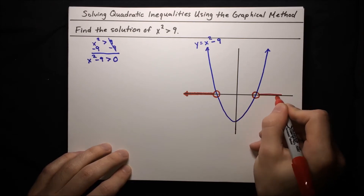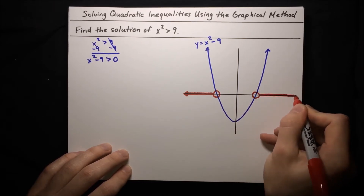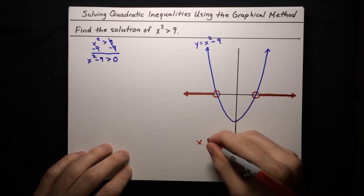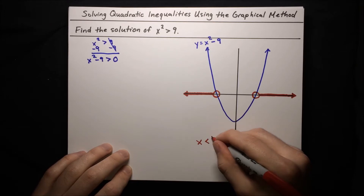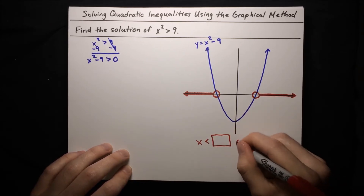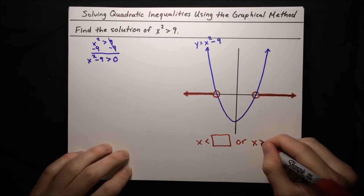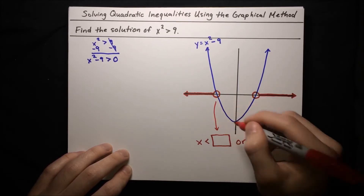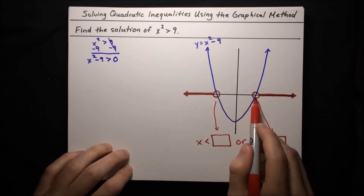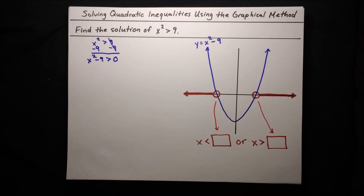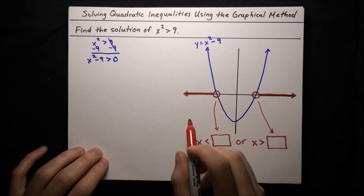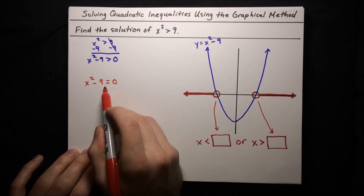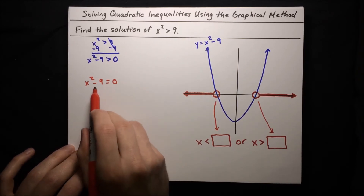We want everything to the right of that root. So we know our solution is going to be of the form x is less than our first root, or x is greater than the second root. But we don't actually know what the roots are yet — that's what we need to figure out. The way we can figure this out is by setting the function equal to 0: x squared minus 9 equals 0, and we just need to solve that.